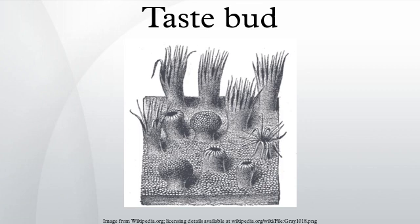Via small openings in the tongue epithelium called taste pores, parts of the food dissolved in saliva come into contact with taste receptors. These are located on top of the taste receptor cells that constitute the taste buds. The taste receptor cells send information detected by clusters of various receptors and ion channels to the gustatory areas of the brain via the 7th, 9th, and 10th cranial nerves. On average, the human tongue has 3,000 to 10,000 taste buds.